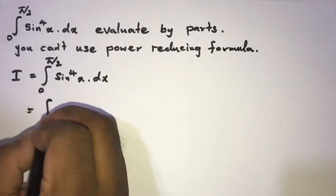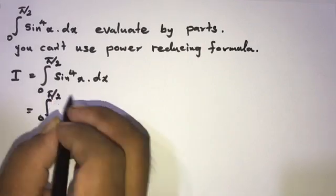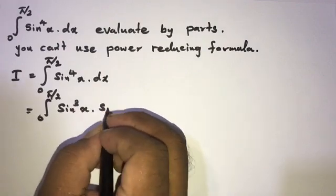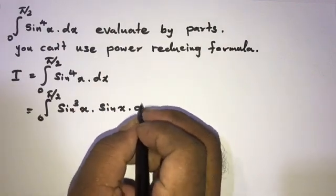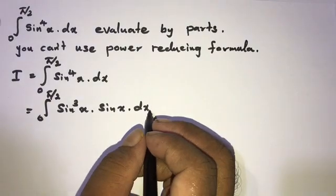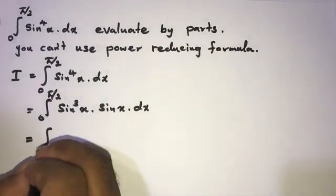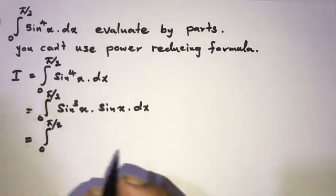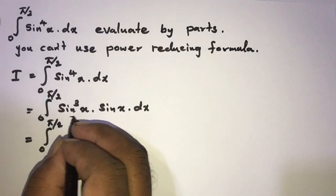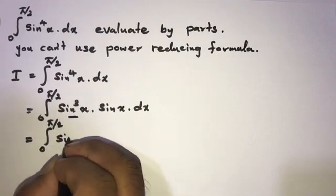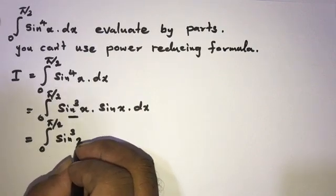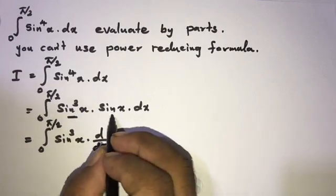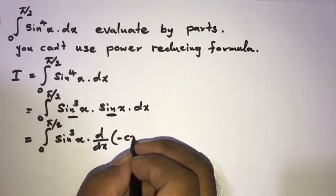Now we can write this as a product of two functions: sine to the third power of x times sine of x dx. Then, applying the steps of integration by parts, from 0 to 5π/2, we rewrite the first function as sine to the third power of x, and d/dx — now the integration of the second part, sine x, is equal to minus cos x.